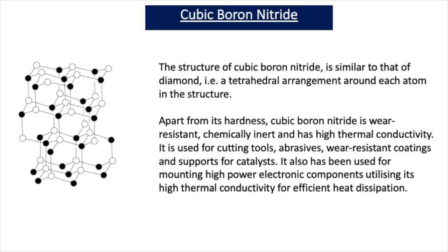Now let's look at the second form of boron nitride: cubic boron nitride. The structure of cubic boron nitride is similar to that of diamond — it has a tetrahedral arrangement around each atom in the structure. Cubic boron nitride is the second hardest material known to man. Apart from its hardness, cubic boron nitride is wear resistant, chemically inert, and has high thermal conductivity. The reason it is very hard is because it has a giant structure with strong covalent bonds in all directions. Its hardness means it is used for cutting tools, abrasives, wear resistant coatings and supports for catalysts. It is also being used for mounting high power electronic components, utilizing its high thermal conductivity for efficient heat dissipation.